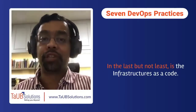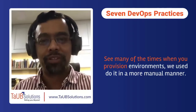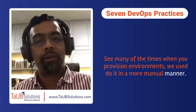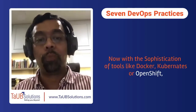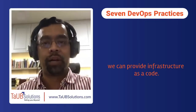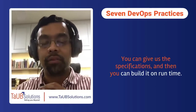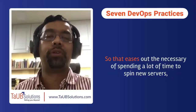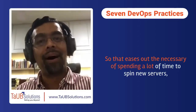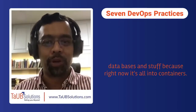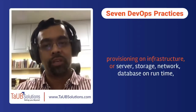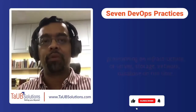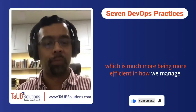The last practice is infrastructure as code. Many times when provisioning environments, it was done manually. Now, with tools like Docker, Kubernetes, or OpenShift, we can provide infrastructure as code — you give the specifications and build it at runtime. This eliminates the need to spend a lot of time spinning up new servers, databases, and so on. Everything is in containers: write the code once and run it anywhere. Infrastructure as code means provisioning your server, storage, network, and database at runtime, which is far more efficient.